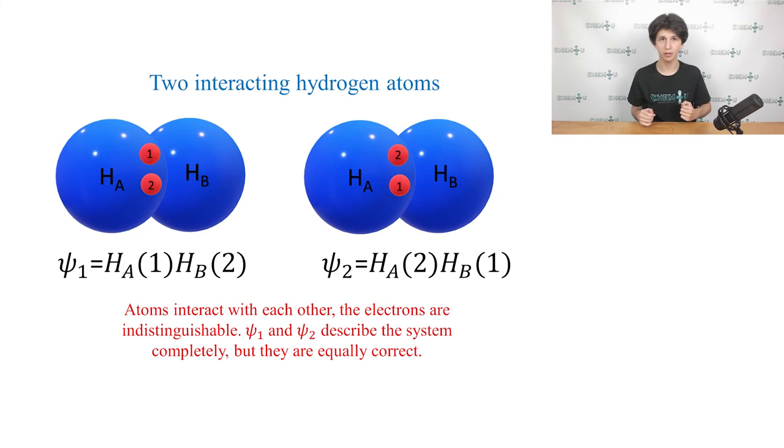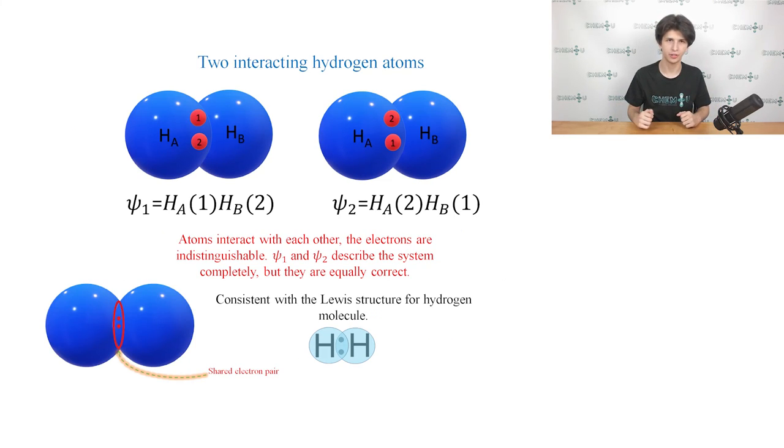When hydrogen atoms are close together, we cannot tell which electron is associated with which nucleus. Although we gave them labels, the two nuclei are indistinguishable. In this case, the two electrons can't be distinguished either. It is consistent with the Lewis structure, in which the shared electron pair was attributed to both atoms simultaneously. To put it simply, electron 1 could be associated with the hydrogen atom HA, and electron 2 with the atom HB, and vice versa. Both combinations are equally probable. This can be depicted by the wave functions ψ1 and ψ2.